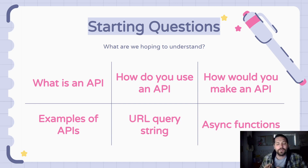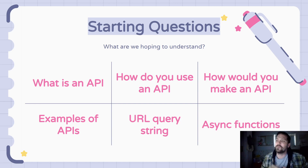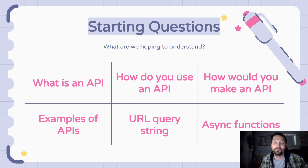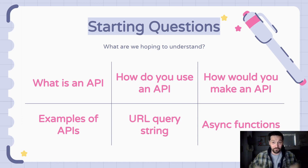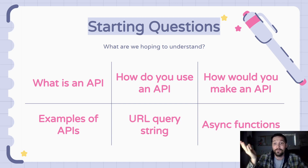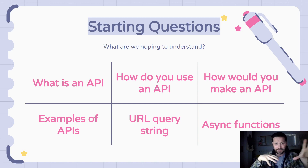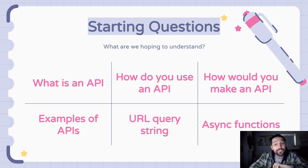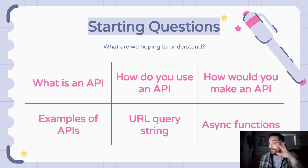Here are some of the questions that this presentation is going to answer. There will be another video — a tutorial walkthrough of the project. Right now we're really only looking at vocabulary. We're not looking at how to solve a problem; we're looking at what the words mean so we can understand ourselves. Some questions are: What is an API? How do you use one? How would you make one? What examples exist? Are you using them already? What's a URL query string? And what is an async function?